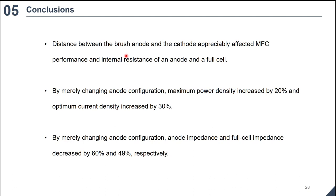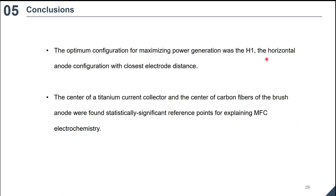Conclusions. Distance between the brush anode and the cathode appreciably affected MFC performance and internal resistance of an anode in a full cell. By merely changing anode configuration, maximum power density increased by 20% and optimum current density increased by 30%. By merely changing anode configuration, anode impedance and full cell impedance decreased by 60% and 49%, respectively. The optimum configuration for maximizing power generation was the H1, the horizontal anode configuration with closest electrode distance. The center of a titanium current collector and the center of carbon fibers of the brush anode were found statistically significant reference points for explaining MFC electrochemistry.